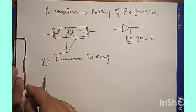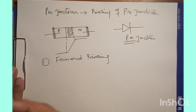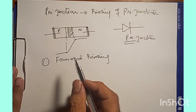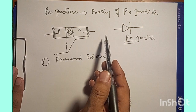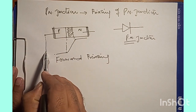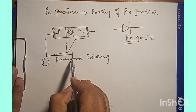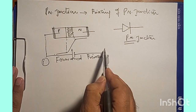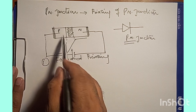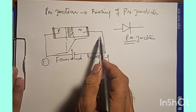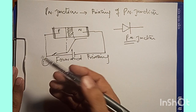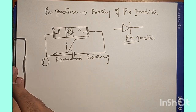How do we define forward biasing? It is when the positive terminal of the battery is connected to the P region. So if we have a cell with a positive terminal and a negative terminal, when the positive side is connected to the P type material and the negative side is connected to the N type material, then we say that this PN junction is in forward biasing mode.